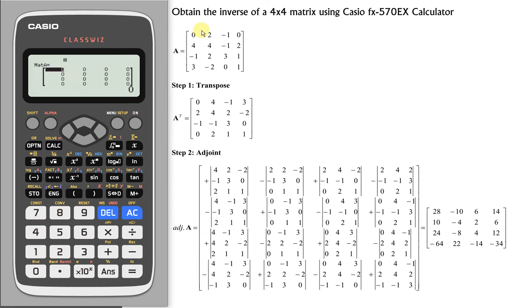We enter the values accordingly. So 0 equal, 2 equal, negative 1 equal, 0 equal, 4 equal, 4 equal, negative 1 equal, 2 equal, negative 1 equal, 2 equal, 3 equal, 1 equal, 3 equal, negative 2 equal, 0 equal, and 1 equal.